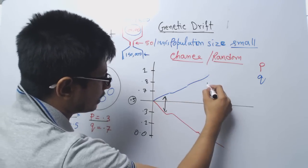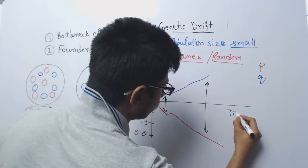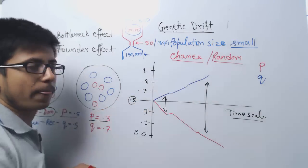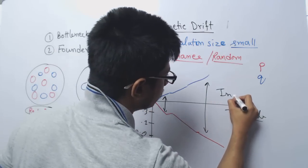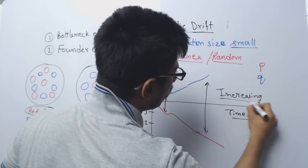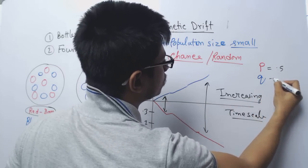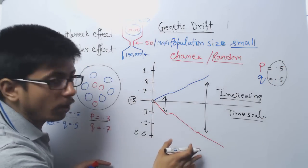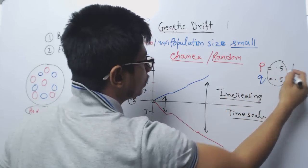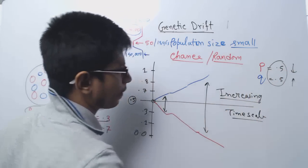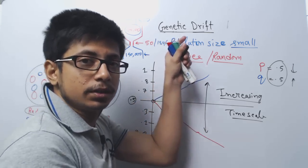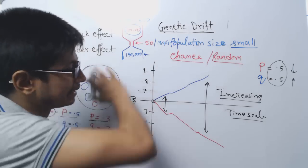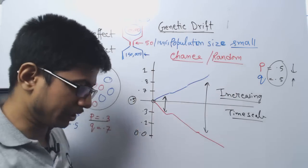If you look at some years later, the drifting value is increasing over time. The frequencies for P and Q both started at 0.5, but as we go on, the frequency for P goes down and frequency for Q goes up. They drift apart slowly. That is what we call genetic drift — this is what genetic drift is all about.